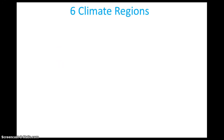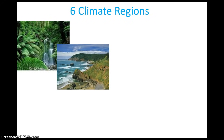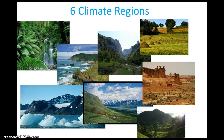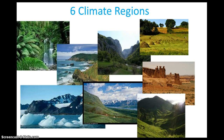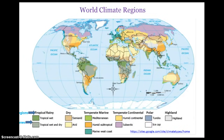We will study six climate regions in this unit: tropical rainy, temperate marine, temperate continental, polar, dry, and highlands. Tropical rainy, temperate marine, temperate continental, and polar are based on latitude. Dry and highland climates can be found anywhere in the world. You will answer questions six, seven, and eight as you learn about each climate region. Here you can see the six climate regions we will be studying. Five of them are divided into areas called zones. Most of the information on this screencast comes from the website listed at the bottom of the screen.